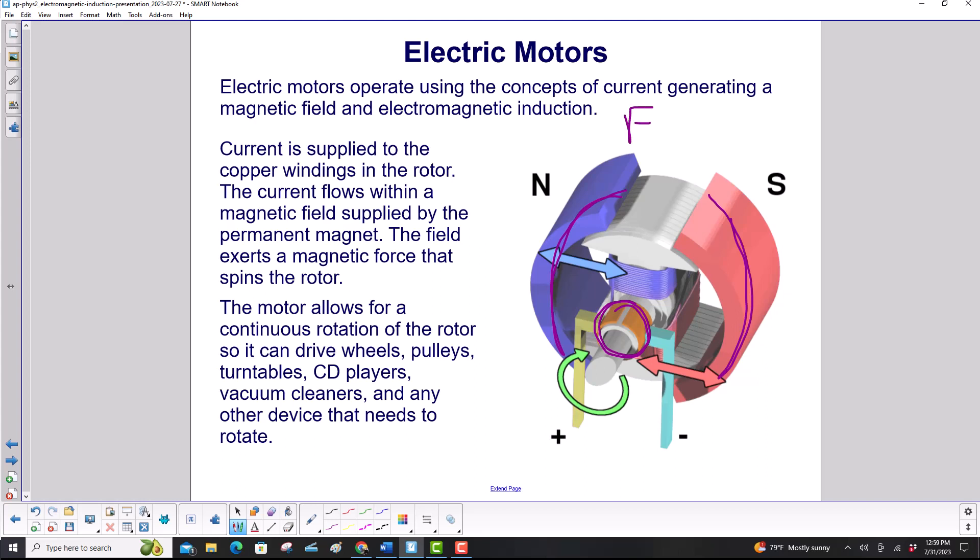And that comes from this equation here, F is equal to I L B. Magnetic force, magnetic field, times the current.